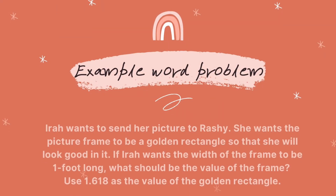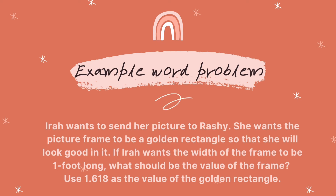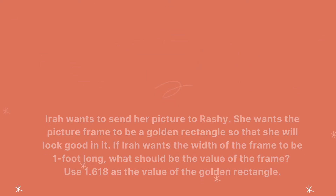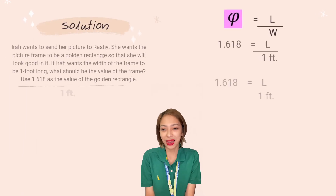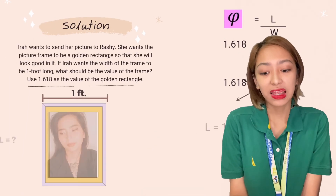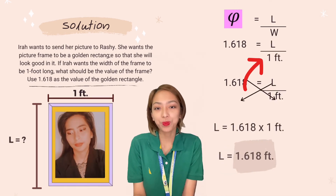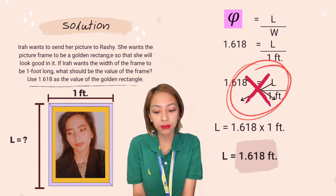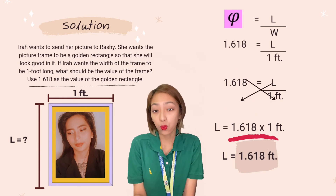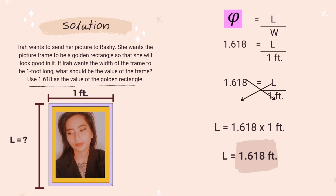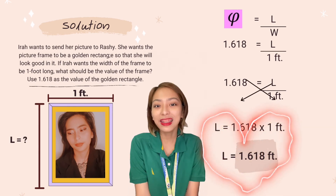Let's solve a word problem. Ira wants to send her picture to Rashi. She wants the picture frame to be a golden rectangle so that she will look good in it. If Ira wants the width of the frame to be one foot long, what should be the length of the frame? Using 1.618 as the value of the golden ratio, we substitute phi with 1.618 and W with one foot, then cross multiply. 1.618 times one foot equals 1.618 feet. So that is the length needed to have a golden rectangle.